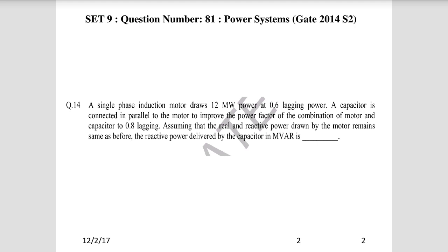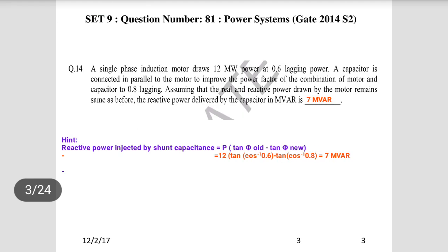The power factor has been improved from 0.6 to 0.8 by connecting the capacitor bank. They are asking what is the reactive power delivered by the capacitor. Reactive power delivered by the capacitor = P × (tan φ_old − tan φ_new), where tan φ_old is at 0.6 lagging and tan φ_new is at 0.8 lagging. Substituting: 12 × (tan(cos⁻¹(0.6)) − tan(cos⁻¹(0.8))) = 7 MVAR. So the answer is 7 megawatt.